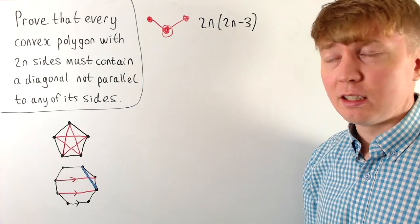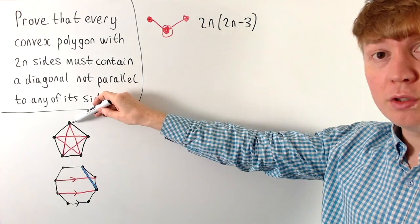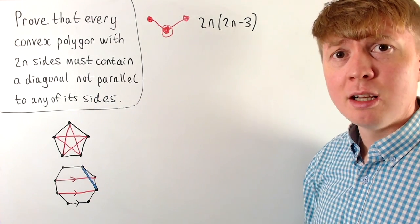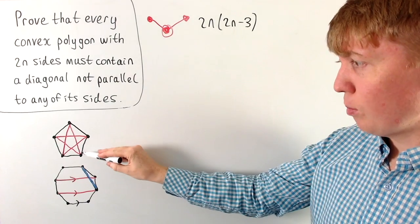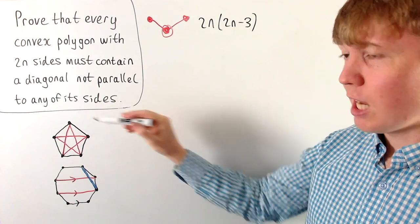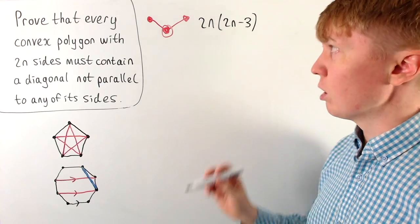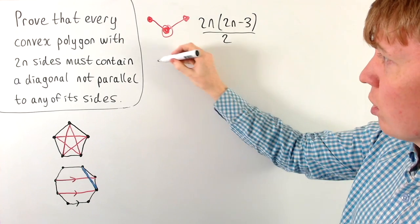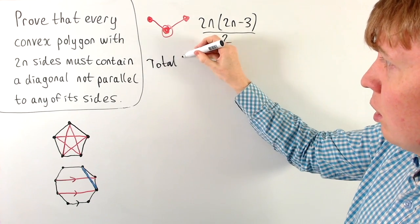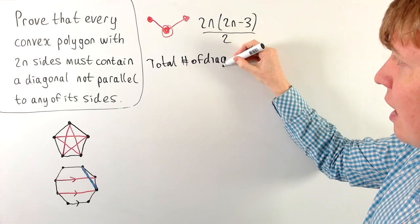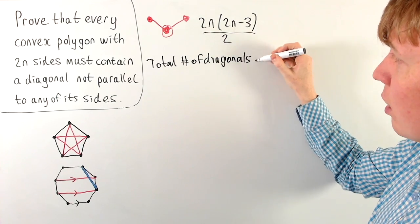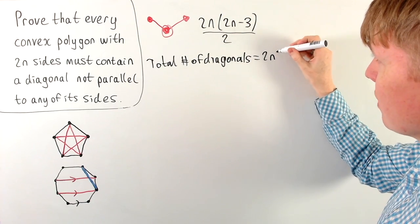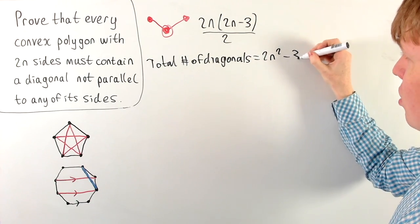The only issue with this calculation is that, from the point of view of one vertex, it forms a diagonal with another vertex — but then from the point of view of that second vertex, it forms the same diagonal again. So we end up double counting, and we just need to divide by 2. So the total number of diagonals in our 2n-sided polygon is 2n times (2n minus 3) divided by 2, which gives us 2n² minus 3n.